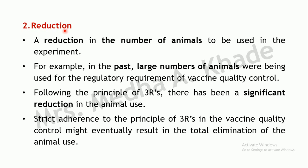The second R is Reduction—reducing the number of animals used in experiments. In olden days, a large number of animals were utilized; for example, in vaccine quality control, a large number were required. By following the principle of Reduction, you can significantly reduce the number of animals required.